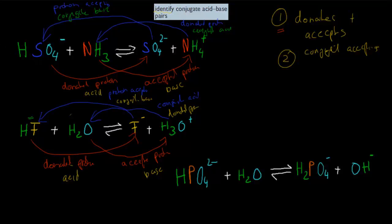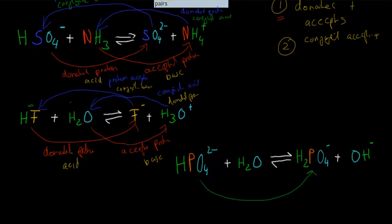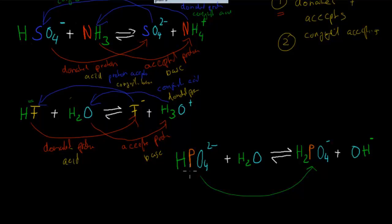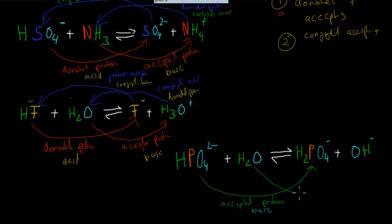Now last is hydrogen phosphate and water, reacting to form dihydrogen phosphate and a hydroxide ion. Hydrogen phosphate goes to dihydrogen phosphate — in this case, we go from having one H to two Hs, so it has obviously accepted a proton, which makes it a base. The water molecule has given one away, so water must be the acid — water goes to OH⁻, and one of the hydrogens has been donated to the dihydrogen phosphate, so water is donating protons in this example, making it the acid.